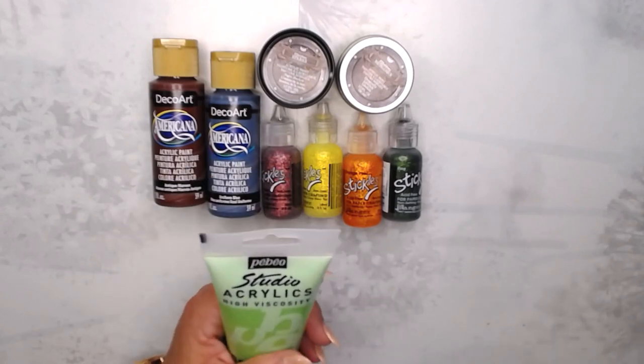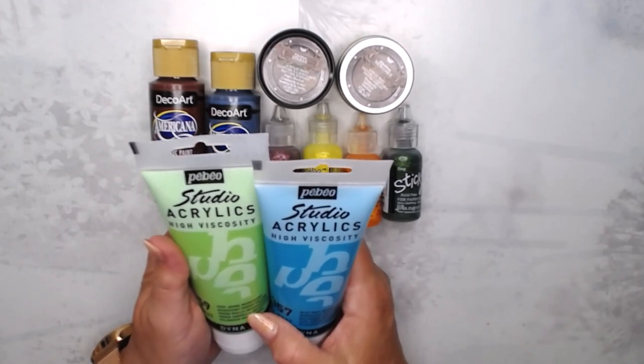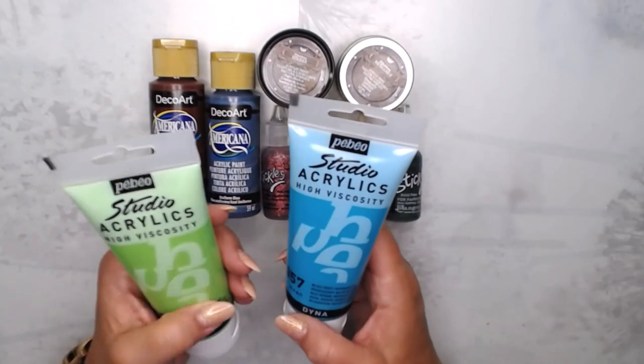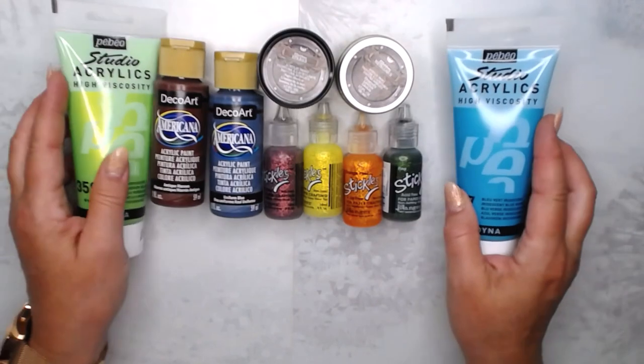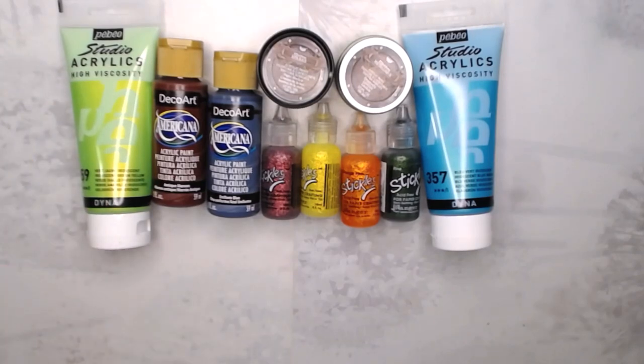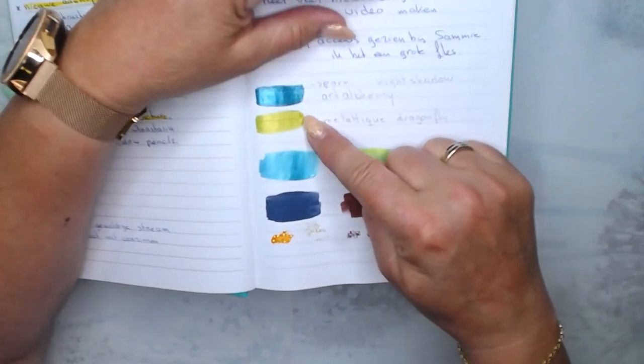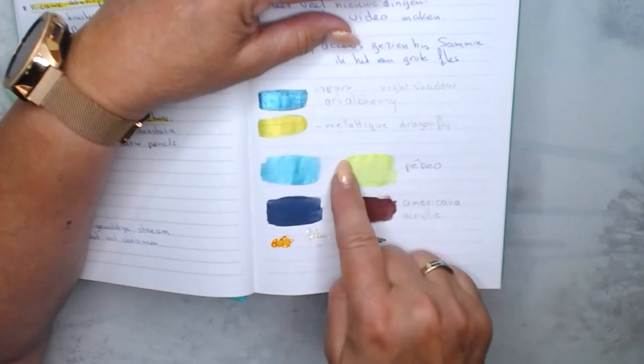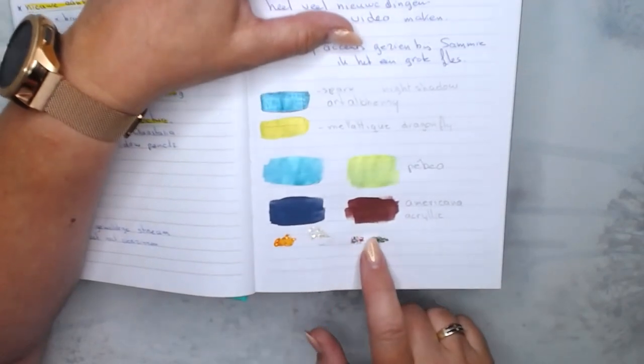And I ordered some Pebeo acrylics. And these are iridescent colors. And I bought the green, yellow, and the blue, green. Because I saw them on a video and well, they were nice. And I did swatches of them. I have to find my book so that I can show them to you. And here you can see, these are the Art Alchemy ones. These are the Pebeo, so in the tubes. And these two colors are the Americana.